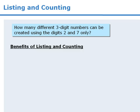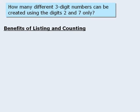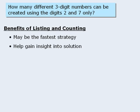This approach has two primary benefits. The first is that it may indeed be the fastest strategy, especially if we cannot see any other approaches. The second benefit is that the process of listing possible outcomes may help us gain some insight into a faster way to solve the question.